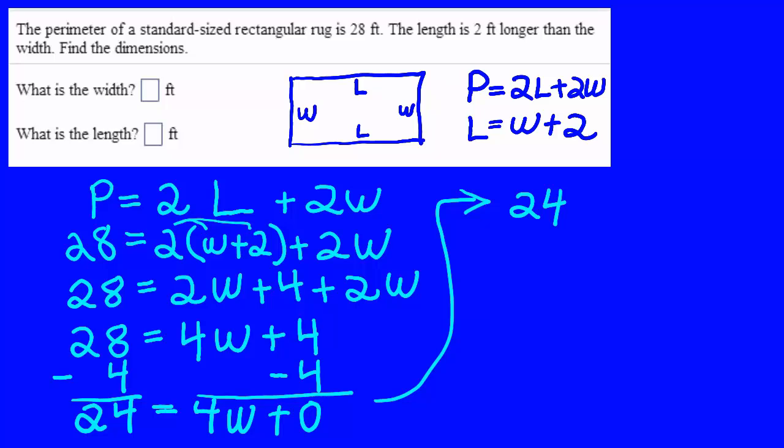One constant term equals one variable term. This is where I divide by the coefficient of the variable. Divide by 4 and divide by 4. And so I discover that W or 1W equals 6. So W equals 6.